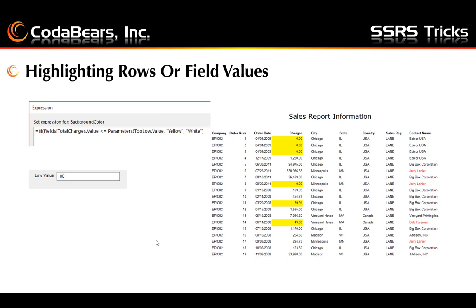Another good trick to use is to highlight values to more easily identify values that are out of range. A parameter can be used to prompt for a low value or a high value, for example. Then an expression can be set up on the fill for the text box, or all text boxes in the row, to color the text box yellow if the charges are less than or equal to the low value of $100. You can also put in low and high prompts if you want to highlight the values between that range. So here we can see the expression: if the total charges value is less than the parameter of too low, make the fill yellow, otherwise make the fill white. And we put in the parameter low value is 100.